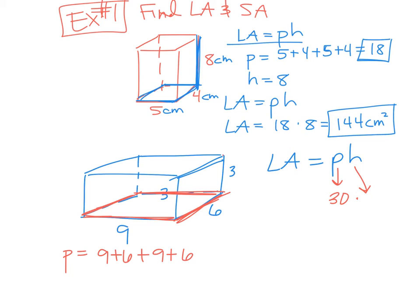What's H? H is the 3, the height of the prism. So 30 times 3 gives you a lateral area of 90 square units, whatever your units are. But for this one, we're going to find the surface area too. So the first one, we just found lateral area, and you could stop there because that's all they ask for.